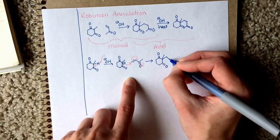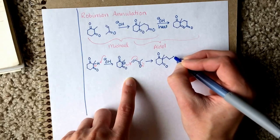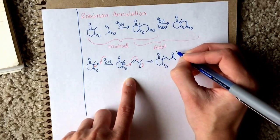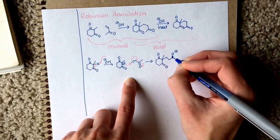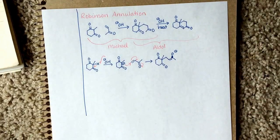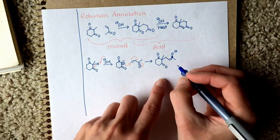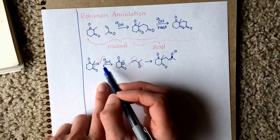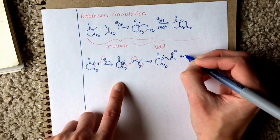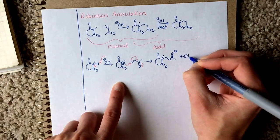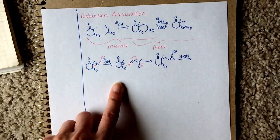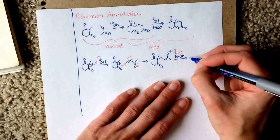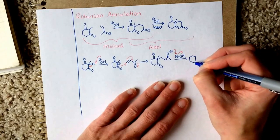One, two, three, four — the bond is here. The hydroxide ion that we used to deprotonate has now become a water molecule, and that water molecule can be used to protonate the oxygen and complete the Michael addition process.